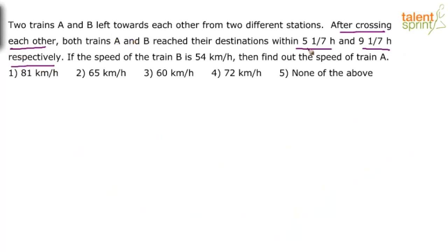So after crossing each other, train A took 5 1/7 hours and B took 9 1/7 hours to reach their destinations respectively. If the speed of train B is 54 kilometers per hour, then find out the speed of train A.